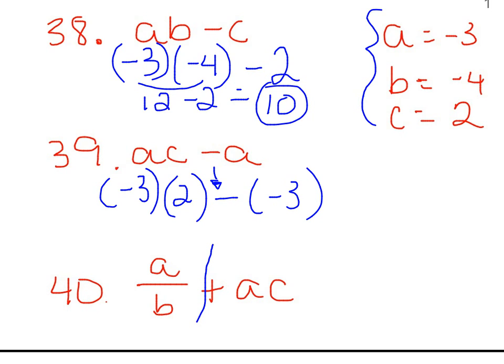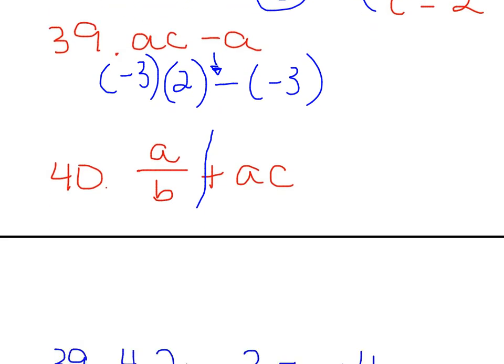So what we're going to do is we're going to multiply the negative 3 times the 2, which would give us negative 6. And then this would change to plus a positive, and so we get negative 6 plus 3, following our rules for adding integers, that gives us negative 3. So that's your answer on 39.